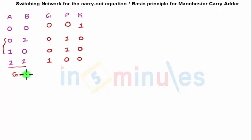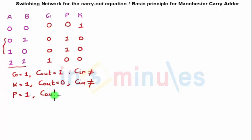We have also seen that when generate is high, C out is equal to one irrespective of C in, so we don't depend on C in here. When K is equal to one, or kill is equal to one, my carry is killed or C out is zero. We again don't depend on C in here. However, when my propagate is one, my C out is equal to C in.